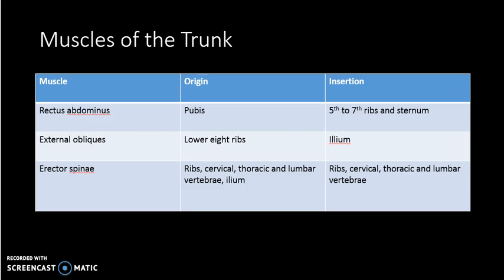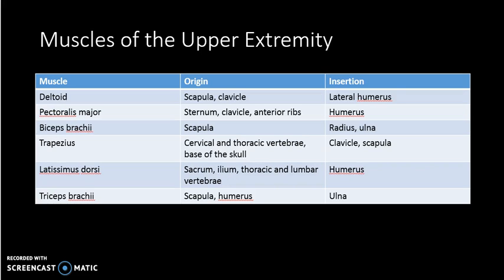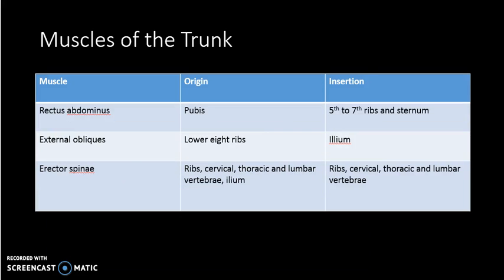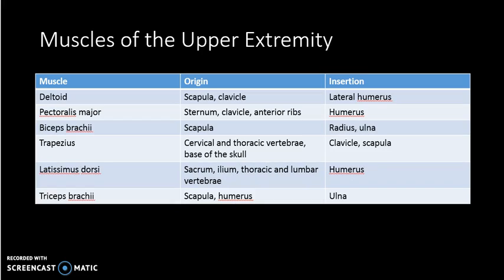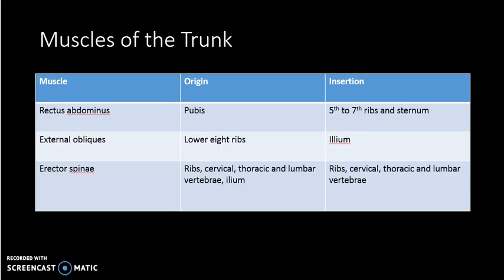Scrolling through the rest of this PowerPoint you'll see the origins and insertions of a range of muscles — the muscles of the trunk, upper extremity, and legs. Many muscles have numerous origins and insertions, which helps to increase both stability and range of motion. Each origin and insertion would typically require its own tendon, so it's not unusual for muscles to have multiple tendons. For example, the biceps is called 'biceps' because the prefix 'bi' means it has two tendons or two heads, and the triceps has three.